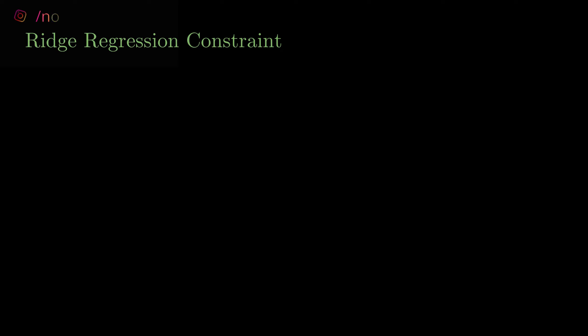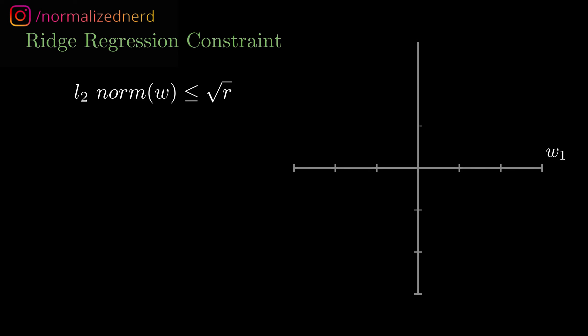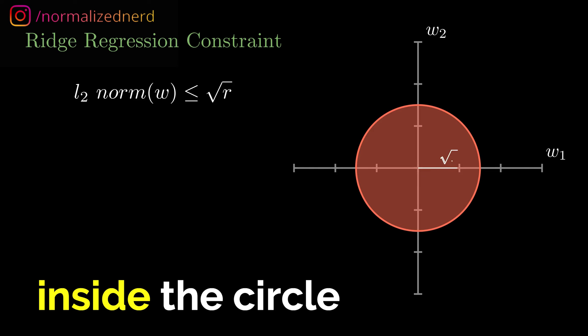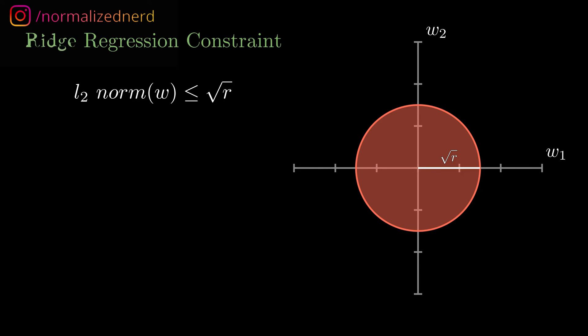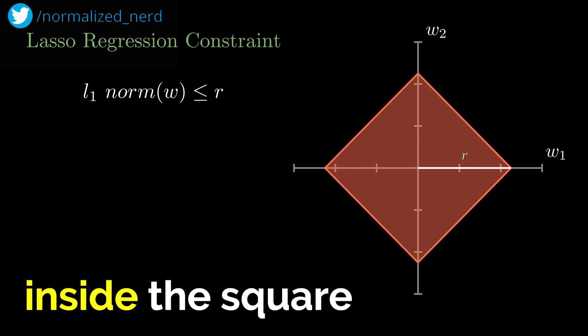In ridge regularization, we put a constraint on the weights. And the constraint says the L2 norm of the weight vector should be less than or equal to some positive value. Visually, the optimized weight vector should lie inside the red circle. If we talk about lasso regression, then the constraint becomes L1 norm. And in this case, the optimized weight vector should lie inside the red square.